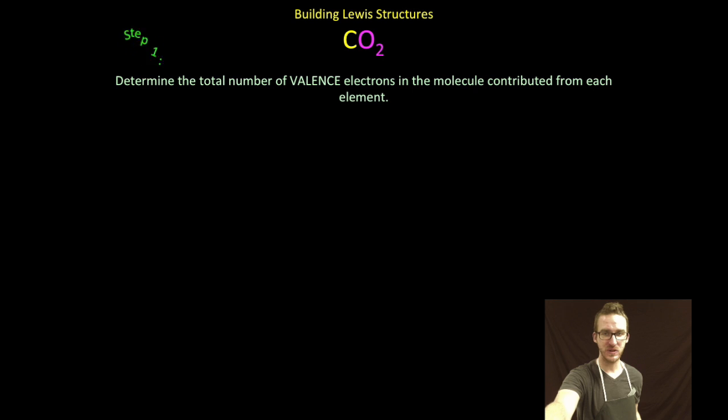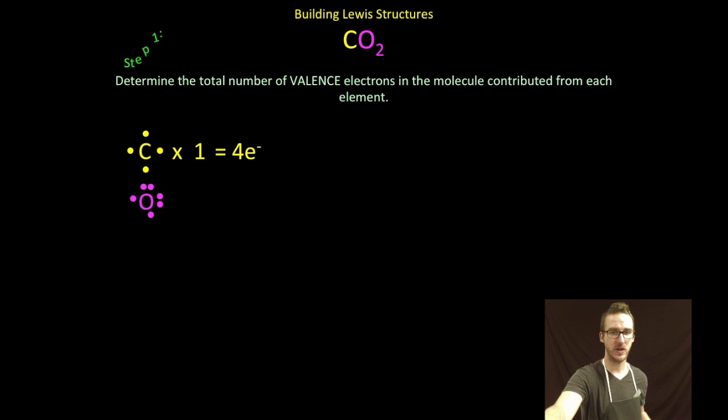We've got CO2 as our Lewis structure. Our first step: determine the total number of valence electrons in the molecule contributed from each element. Carbon is going to contribute four valence electrons each. Oxygen is going to contribute six. I got one atom of carbon, so a total of four valence electrons coming from my carbon. I've got two atoms of oxygen, each contributing six, so I've got 12 total valence electrons coming from my oxygen atoms.